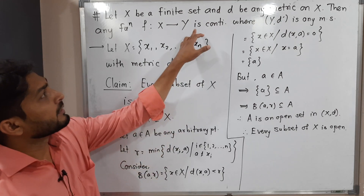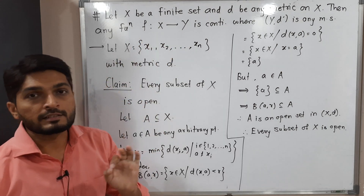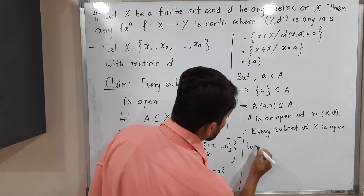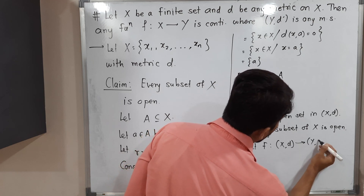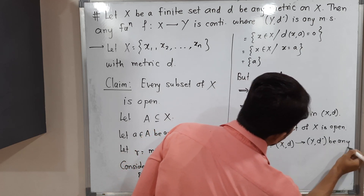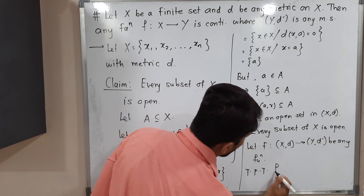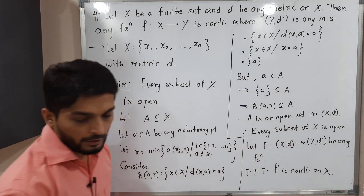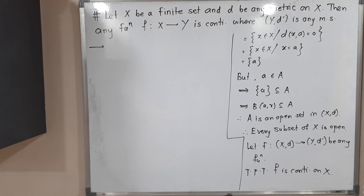Now let us come back to the main result. We have to prove that any function from X to Y is definitely a continuous function. Let F: (X, d) → (Y, d') be any function. We have to prove that F is continuous on X.